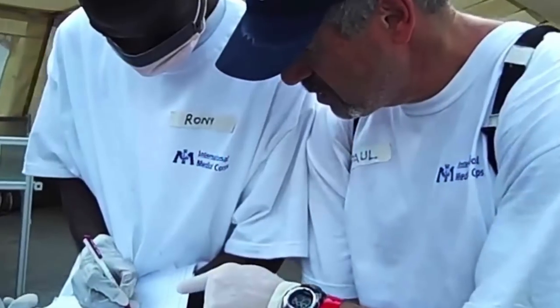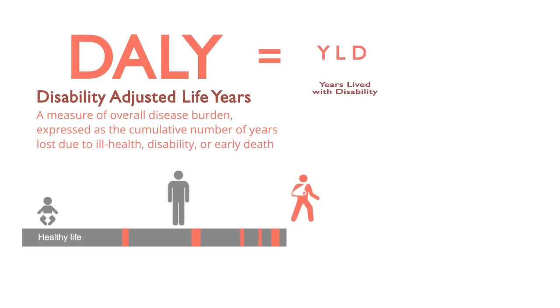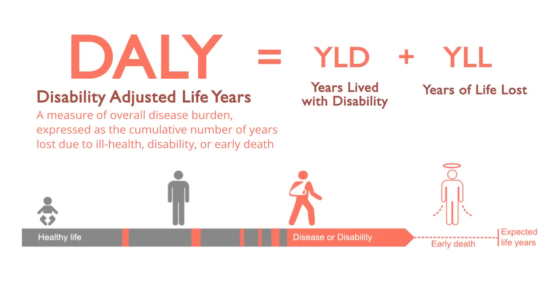One challenge our team has is how to measure the impact of our products. How do we know whether they're actually achieving their goals? We want to make sure that any information we provide to our users is actually relevant to them. Some of these things are not so easy to measure, so we have to come up with creative ways to try and evaluate them. We wanted to find a measurement or metric to help guide our team's work. So after doing internal and external research, we found a metric that tries to measure how much harm is reduced before, during, and after a disaster.